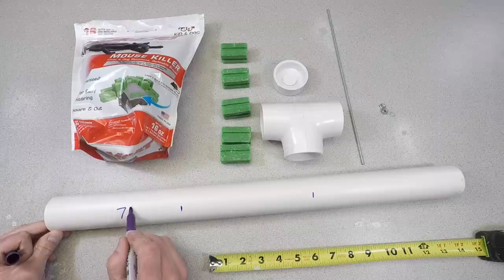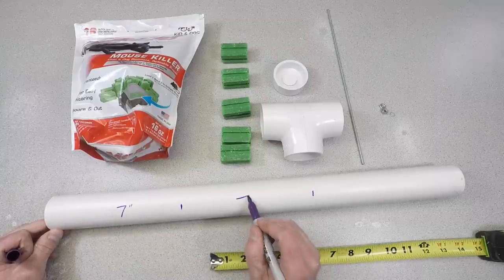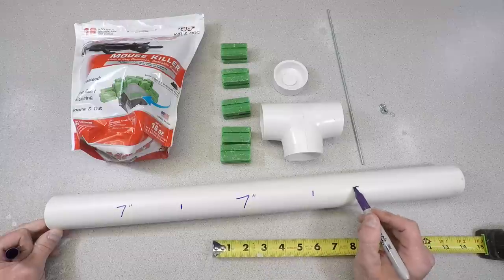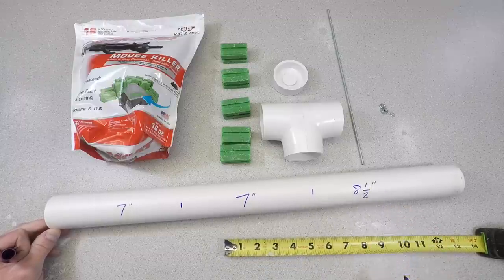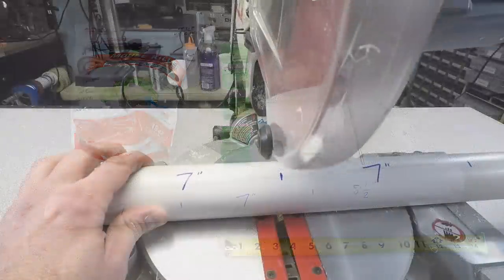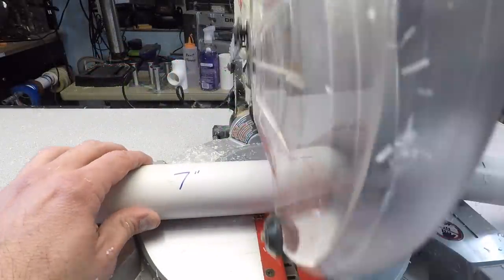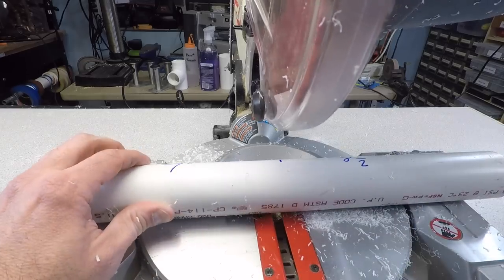I picked up all the supplies for this project at Home Depot. I'm using one and a half inch PVC pipe, but you can also use two inch, which would probably be better for rats. I'm using this small miter saw to cut the PVC, but you can use a hand saw as well.